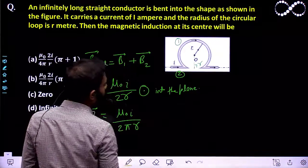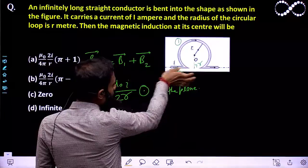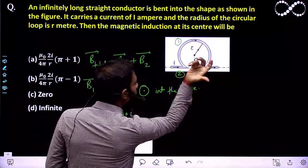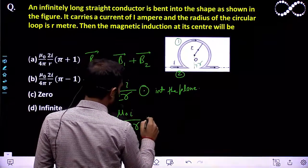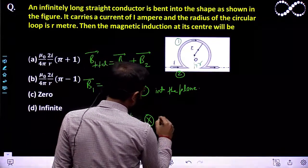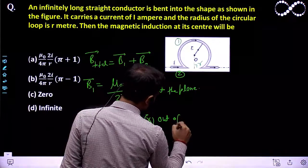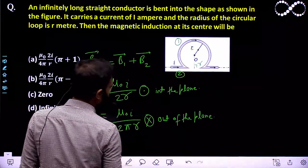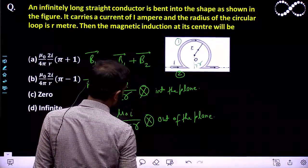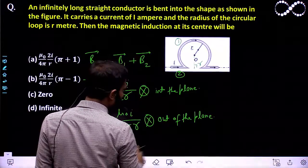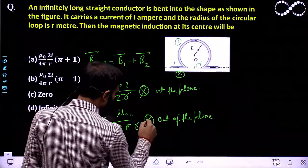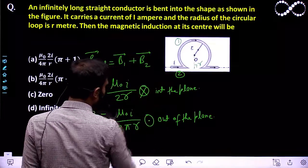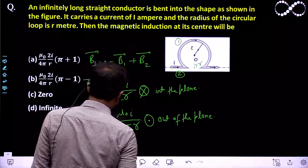If you apply the right-hand rule — put the thumb in the direction of current — the magnetic field due to the straight conductor will be out of the plane of paper. To clarify the symbols: the cross represents into the plane of paper, and the dot represents out of the plane of paper.